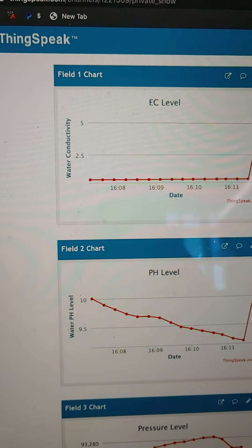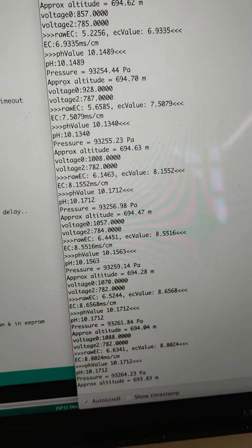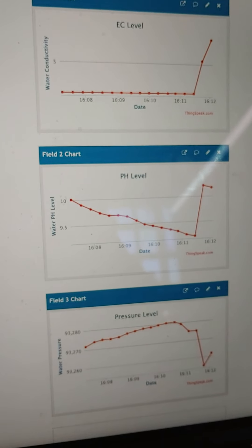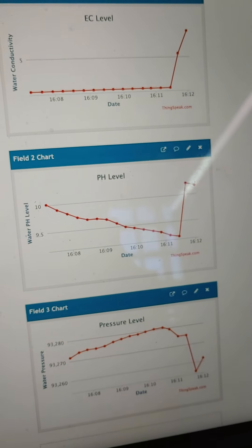Now what ThinkSpeak does, we have our serial monitor updating every three seconds. So every three seconds we get an update here on values. And in ThinkSpeak it's every 15. So for every five updates that we get on the serial monitor we get one point here on ThinkSpeak.